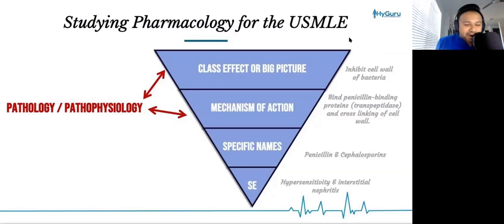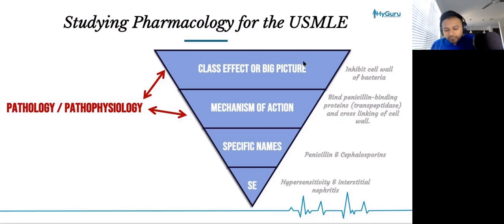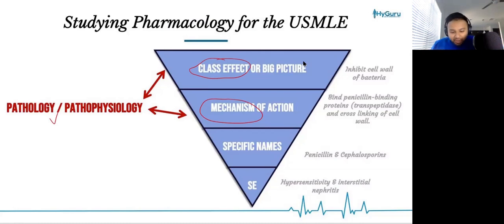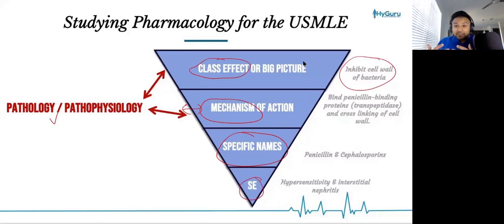One key model I wanted to highlight before we get started is the reverse pyramid model. The reverse pyramid model allows us to take pharmacological agents from a big picture and narrow them down into a focused view. First, we ask: what does the whole class of medications do and what is the mechanism of action? Then we go back and talk about the pathology and pathophysiology, relating the mechanism of action to it. Then we narrow down to the specific names of the agents, and finally we talk about the side effects, which are sometimes specific to various agents within the class.